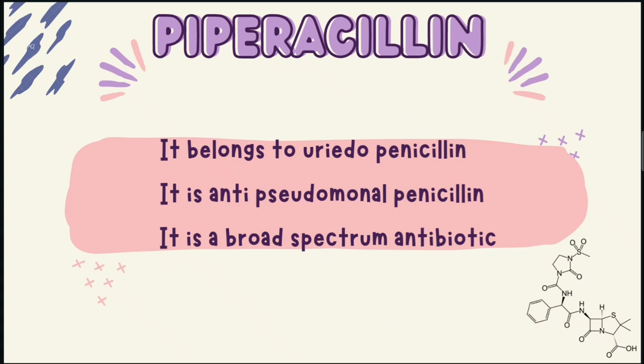Now what is ureido groups? The group which contains a univalent radical i.e. NH2CONH, ureidobenzene asonic acid structure in it, are called ureido groups. You can see the structure of piperacillin containing ureido groups in it at the lower bottom corner of the screen.